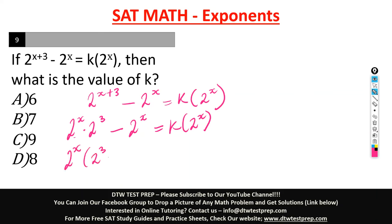So I'm left here with 2 raised to the power of 3 minus 1. Okay, we factored out. When you multiply, you get the same thing here. So this will give us k in parentheses 2 raised to the power of x.